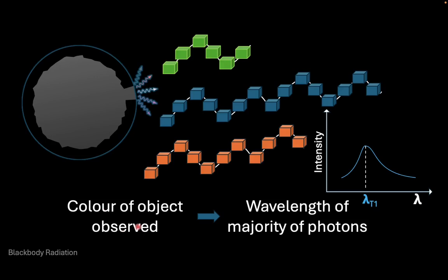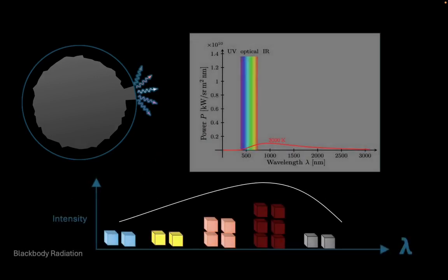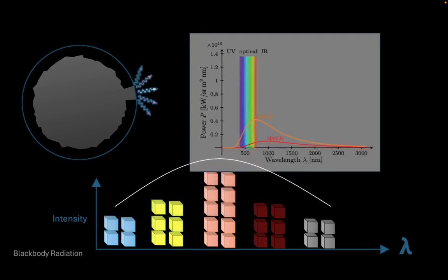For example, at very low temperatures, most of the photons that are emitted belong to the infrared range. However, a small number of photons are emitted in the red wavelength. As such, the object would appear red. However, as the temperature increases, the number of photons that are emitted increases.